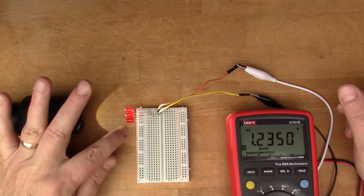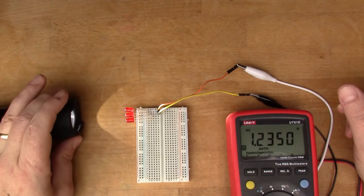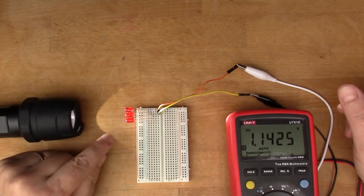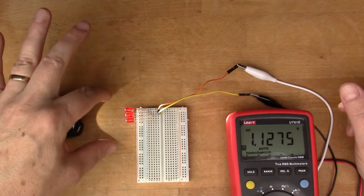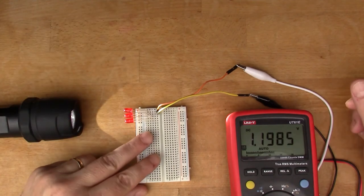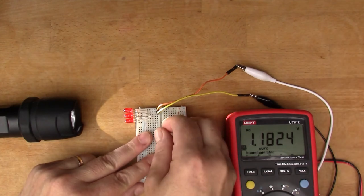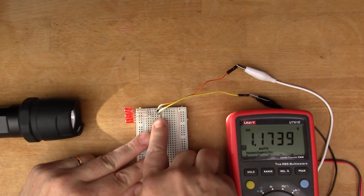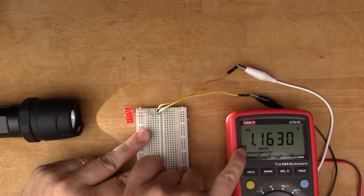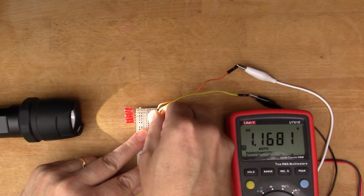So I've set up three LEDs in series here and I'm using the torch to light the LEDs because I needed a wider beam to hit all three of these. At the moment we've just got one LED connected, so that's reading 1.16 volts.